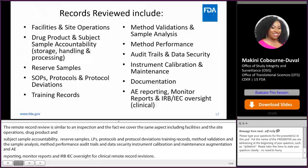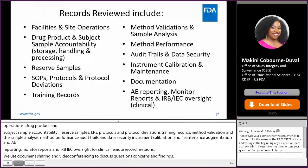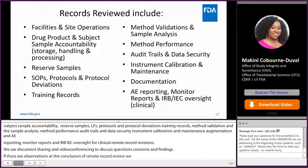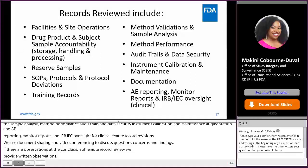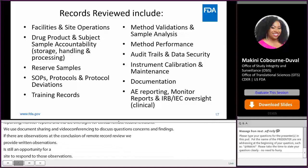If there are observations at the conclusion of a remote record review, we provide written observations and there is still an opportunity for a site to respond to those observations. Most importantly, we are able to identify issues that may impact data reliability and subject protection. The findings from a remote record review are intended to inform new and generic drug application decision-making by assessing the reliability of study data submitted in support of an application.